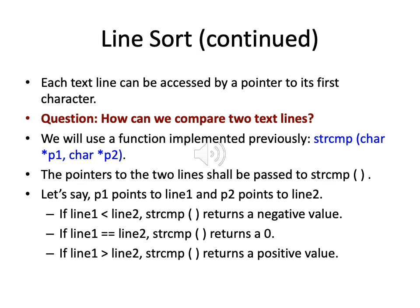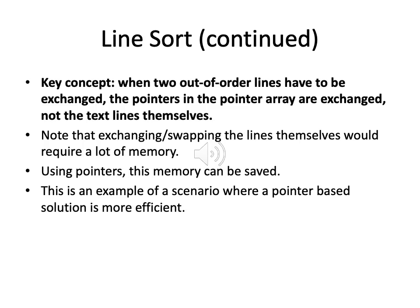Pointers to the two lines will be passed to the string comparison function. If p1 points to line 1 and p2 points to line 2: if line 1 comes before line 2 in a dictionary, string comparison returns a negative value; if they are equal it returns 0; and if line 1 appears after line 2, it returns a positive value. The key concept is that when two out-of-order lines have to be exchanged, the pointers in the pointer array are exchanged — not the text lines themselves.